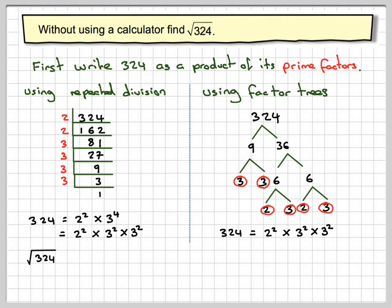Right, to take the square root of 324, we now need to take the square root of this. 2 squared times 3 squared times 3 squared, which is the square root of 2 squared times the square root of 3 squared times the square root of 3 squared. You can split the square roots up.